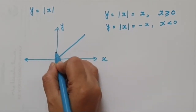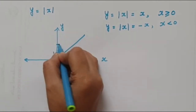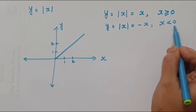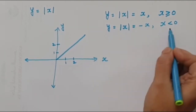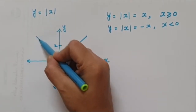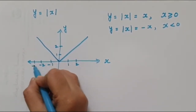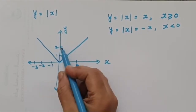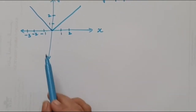We draw this only for the positive values. Now when x is less than 0, that means x is negative. When x takes a negative value, y = -x. The graph of y = -x goes the other way. When x is -1, y is positive; when x is -2, y is also positive. So now we have drawn the graph of y = |x|.